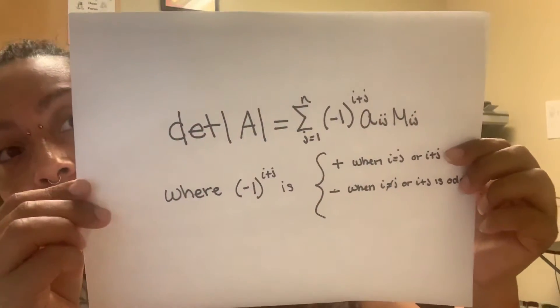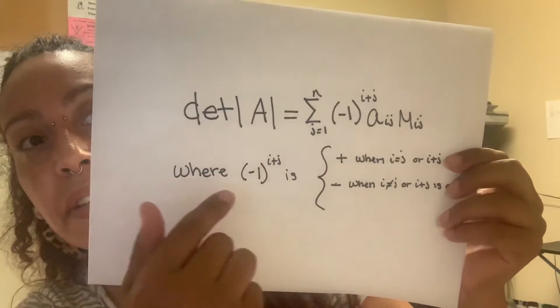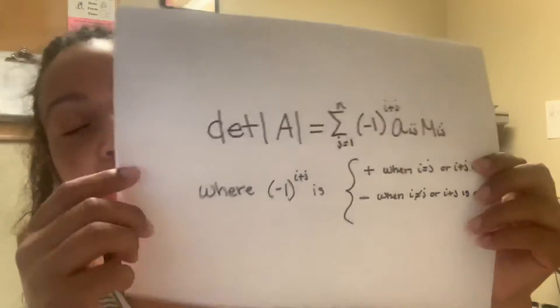The Laplace expansion is like a building block for all the other methods of finding determinants. This is the plus, minus, plus, minus thing that we all went through. Here's the all too familiar formula for that. The Laplace expansion is cool because it works in all dimensions, but it can get a bit messy as we have all seen in higher dimensions.